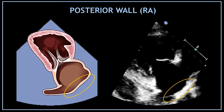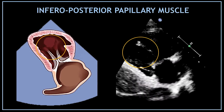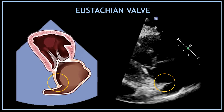That very bright posterior line is the posterior wall of the right atrium. The papillary muscle visualized in this view and attached to the tricuspid valve is the inferior posterior papillary muscle. In this view, sometimes you can see a thin blurry line at the top of the screen on top of the inferior vena cava — this line is the eustachian valve.